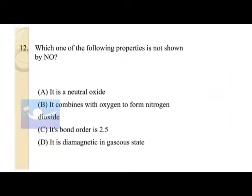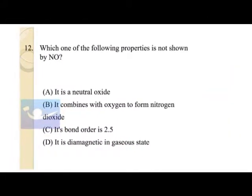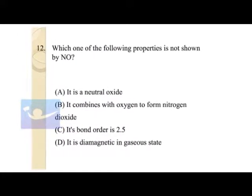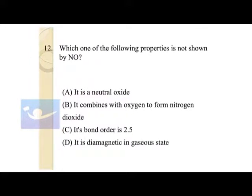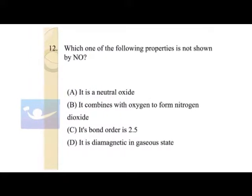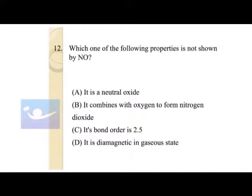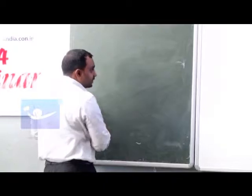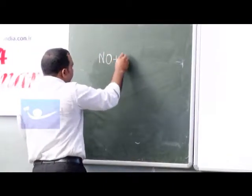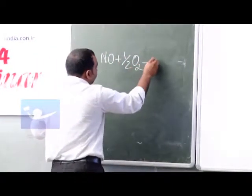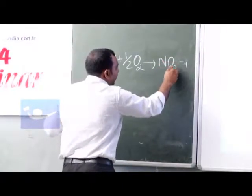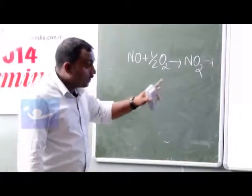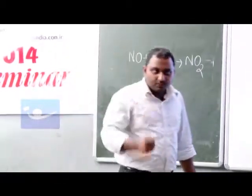Which one of the following properties is not shown by nitrogen monoxide? Nitrogen monoxide, if you look at the periodic property, you know that nitrogen monoxide is a neutral oxide. Then it combines with oxygen to form nitrogen dioxide. Definitely this one combines with nitrogen monoxide - combines with half O₂ to give NO₂.